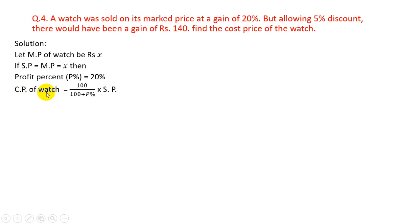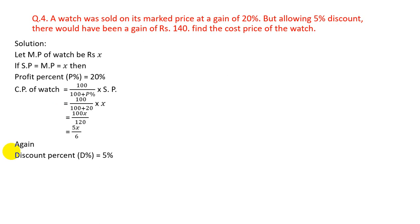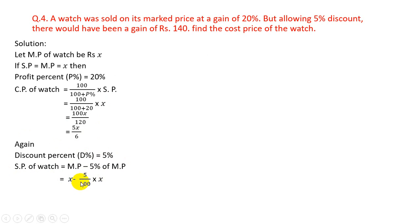CP = 100/(100 + profit%) × SP = 100/120 × X = 5X/6. Again, discount% = 5%, so SP with discount = MP − 5% of MP = X − 5/100 × X = X − X/20. Taking LCM gives SP = 19X/20.